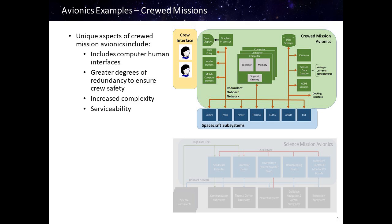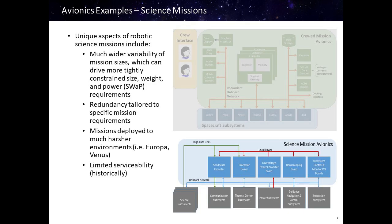— the inclusion of computer-human interfaces, greater degrees of redundancy to ensure crew safety, increased complexity — one example of which is the redundant onboard network shown in the picture, which may be augmented by one or more wireless systems — and serviceability, as the crew is able to service and maintain the avionics once on orbit.